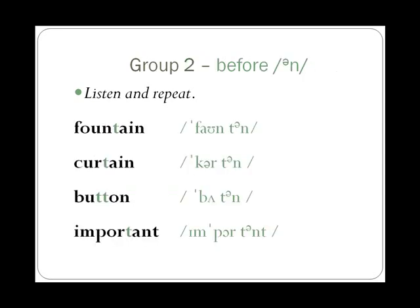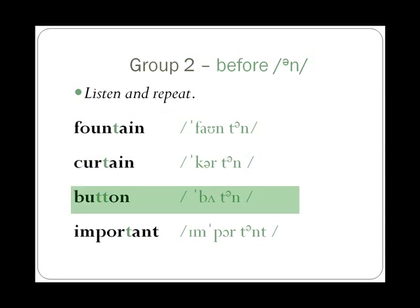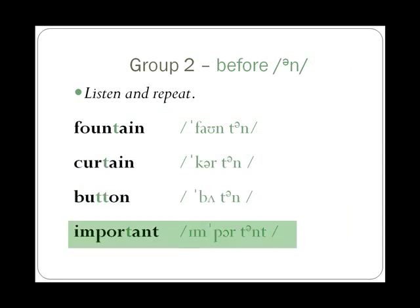Group 2. We use a glottal stop before the sound N — that's an unstressed N sound. Listen and repeat. Fountain. Curtain. Button. Important.